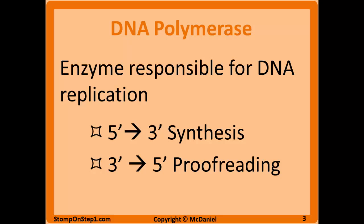In prokaryotes, DNA polymerase 1 mainly handles proofreading and the replacement of RNA primers, while DNA polymerase 3 synthesizes most of the new DNA. You should know that DNA polymerase makes DNA and also has some exonuclease proofreading abilities that go backwards, 3' to 5' prime, looking for mistakes in DNA replication.